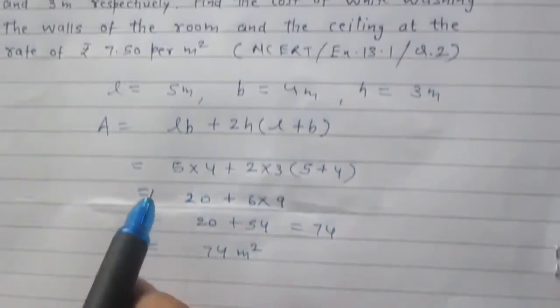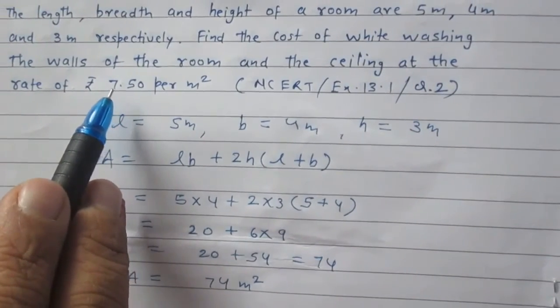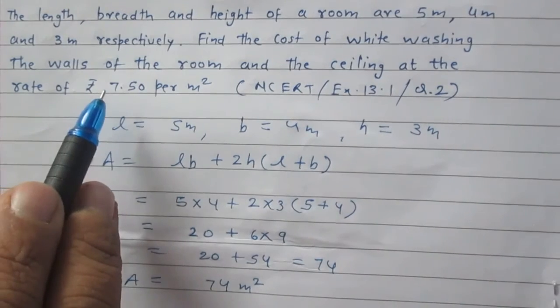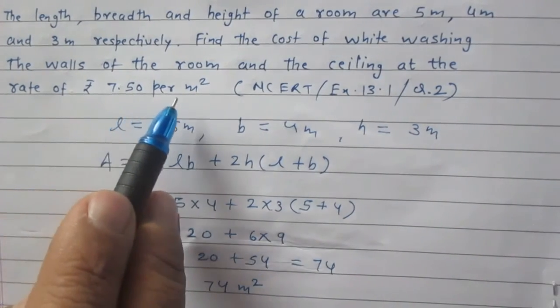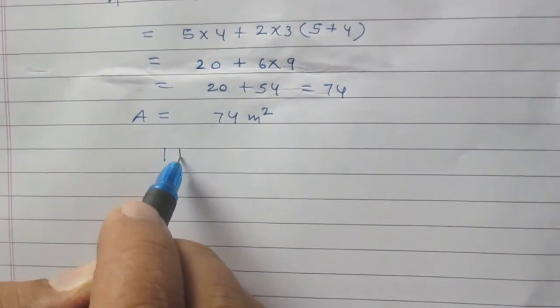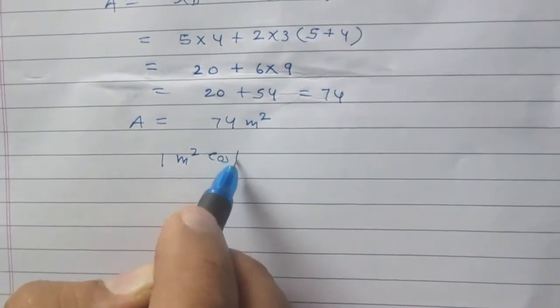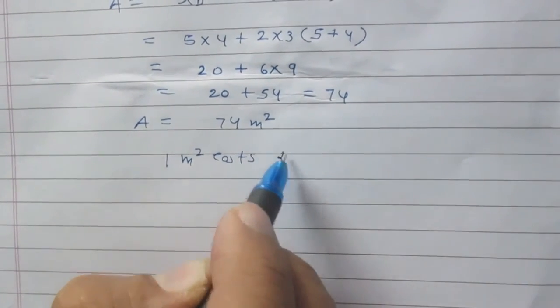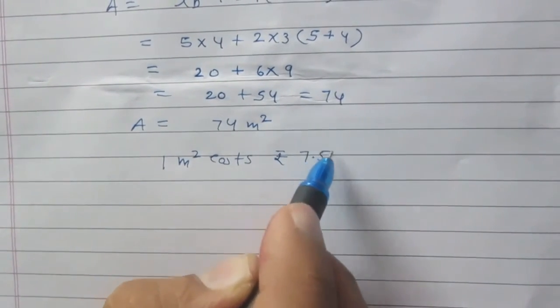And we know that we are given that cost of whitewashing is Rs. 7.50 per meter square. So, we say that area of 1 meter square costs Rs. 7.50.